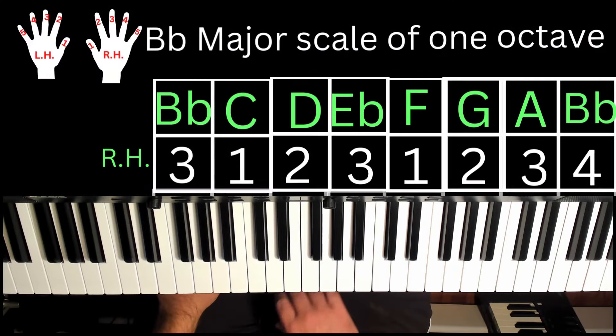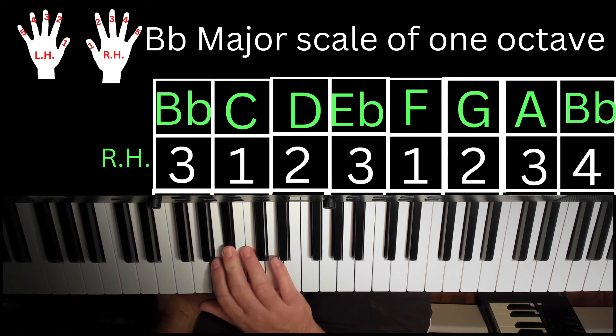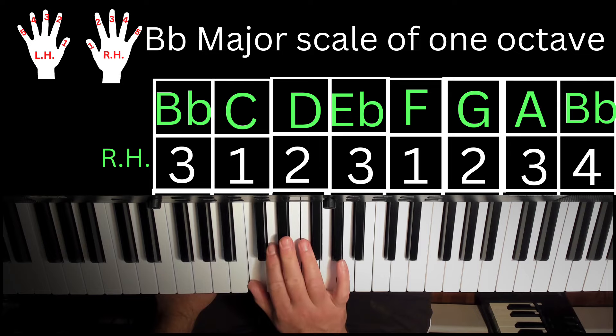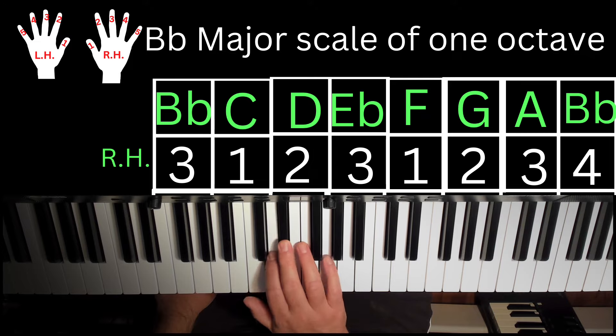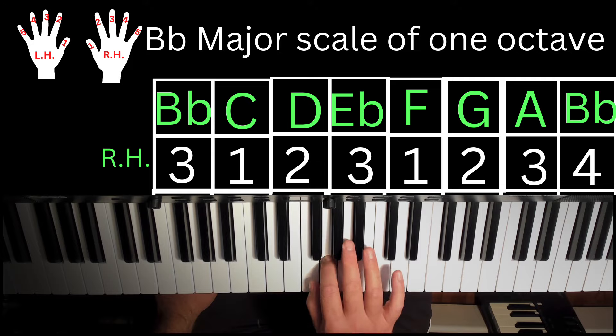We're going to start with the right hand, B-flat major scale. We have the third finger on B-flat, then the first finger on C, two finger on D, third finger on E-flat, and then we're crossing over, one on F, two on G, three on A, four on B-flat.